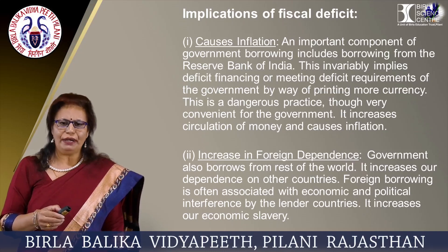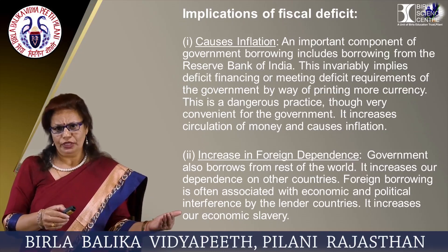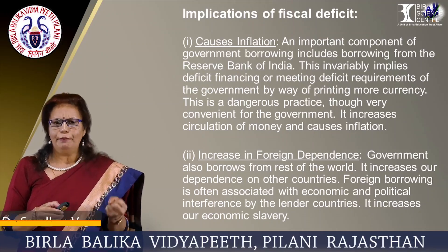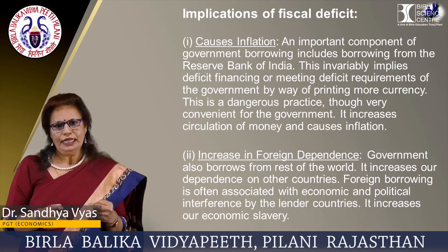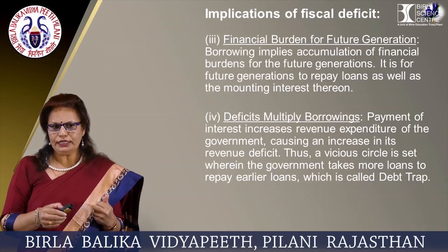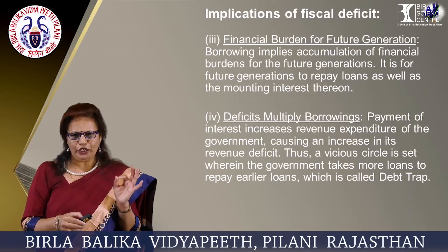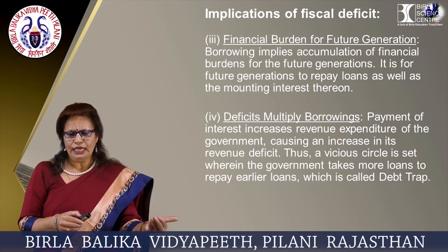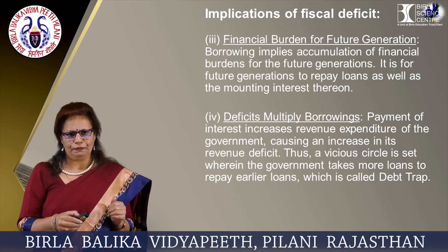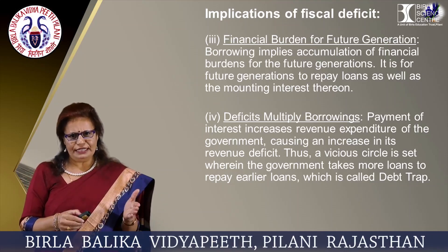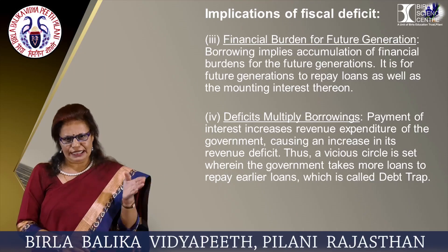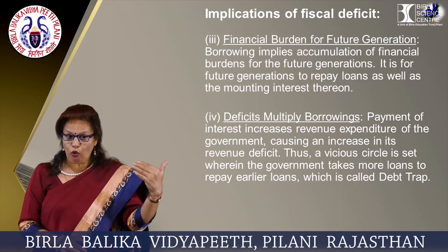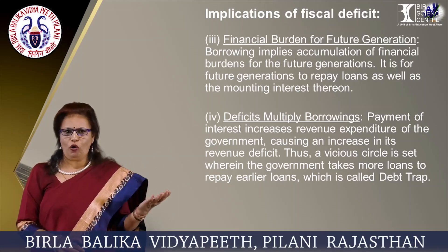Number two is increase in foreign dependence. The government also borrows from the rest of the world, which increases our dependence on other countries. Foreign borrowing is also a financial burden for future generations. Borrowing implies accumulation of financial burdens for future generations, who must repay the loans as well as the mounting interest thereon. Deficits multiply borrowings — payment of interest increases revenue expenditure of the government, causing an increase in its revenue deficit. Thus, a vicious circle is set wherein the government takes more loans to repay earlier loans, which is called a debt trap.